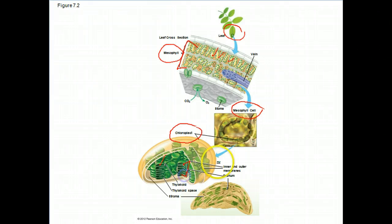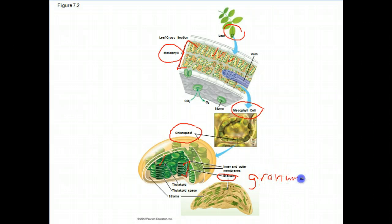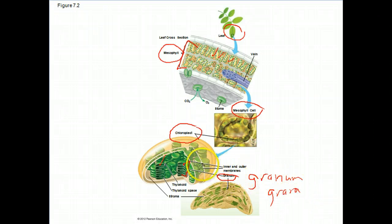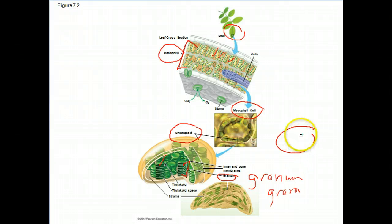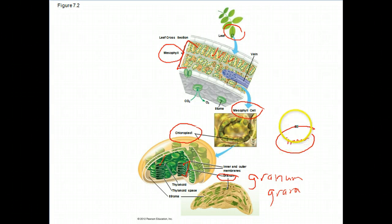Each individual stack we call a granum. The plural for all the granums inside the chloroplasts would be grana. That terminology is not too important, but I just want to make that distinction. If you wanted to define the thylakoid in a little more detail, you have the inner space — it's essentially a hollowed-out sac — and this would be the membrane part where you're going to find the photosystems.